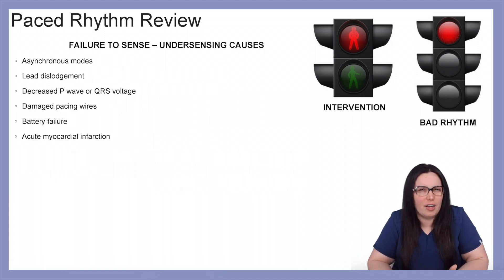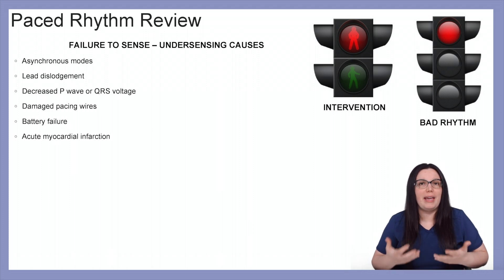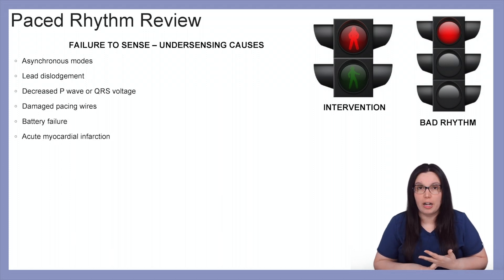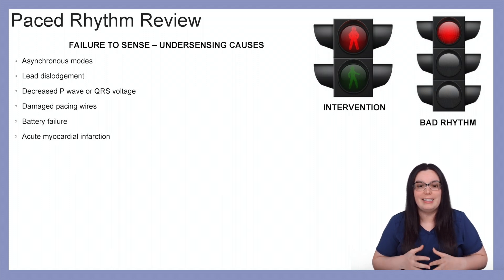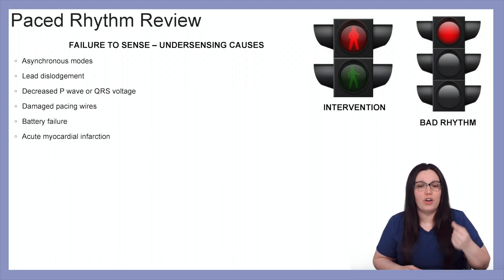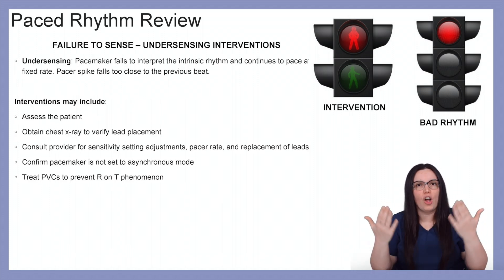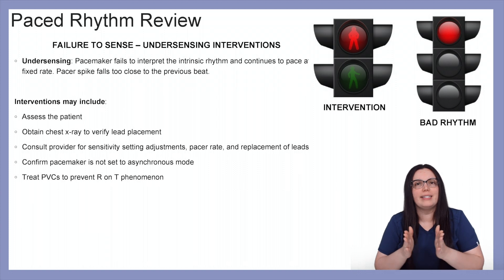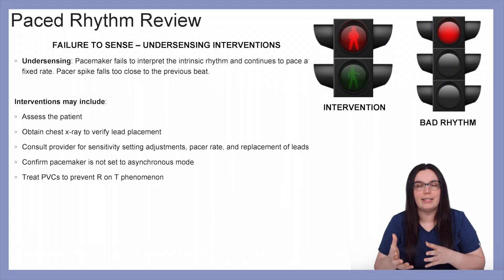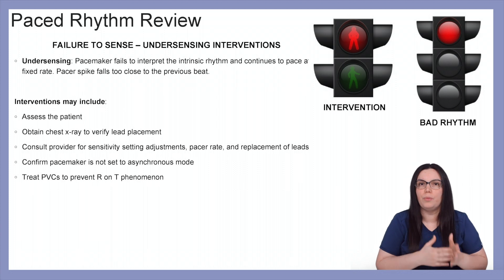Common causes of undersensing include the pacemaker being in asynchronous mode, the lead potentially becoming dislodged, decreased P wave or QRS voltages, damaged pacemaker wires, battery failure, or even an acute myocardial infarction. To summarize: undersensing is the pacemaker's failure to interpret the intrinsic rhythm, causing it to continue pacing at a fixed rate — and when it fails, the pacer spike will fall too close to the previous beat.